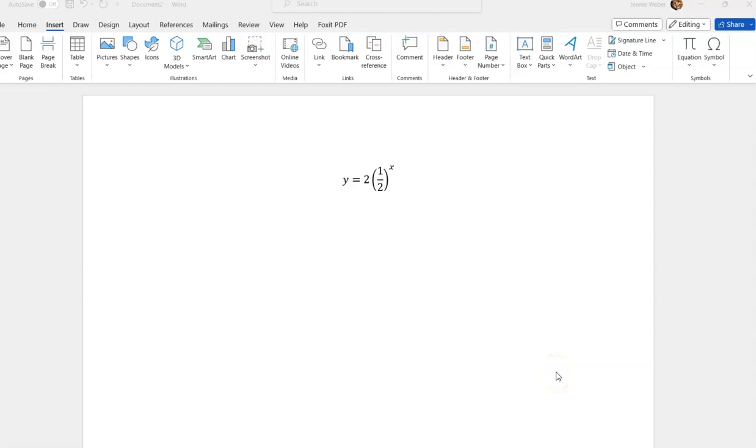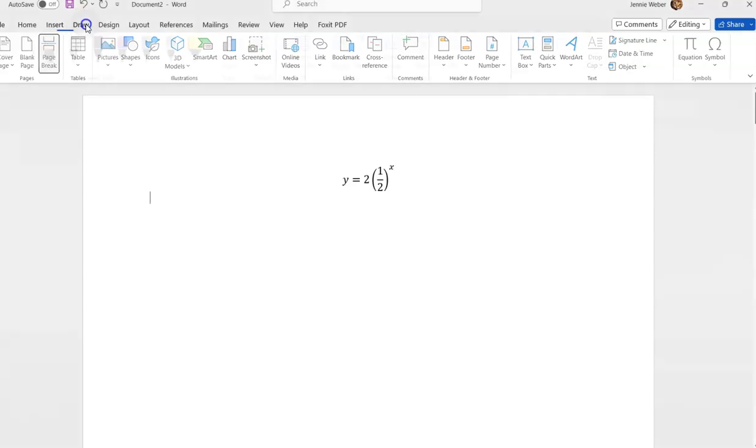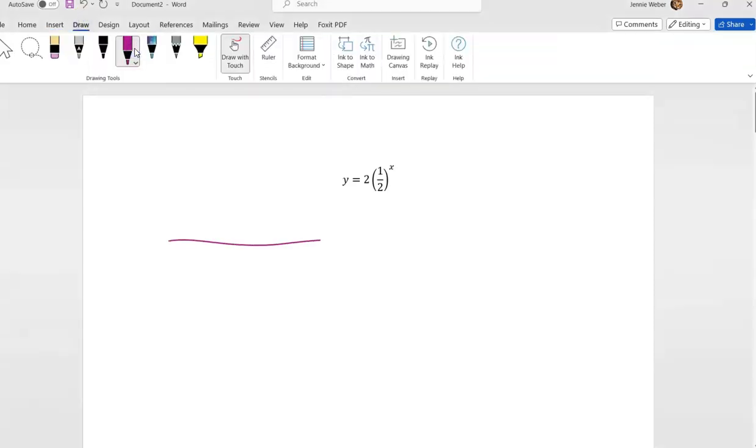Okay, we want to graph this exponential function and we're going to graph it just like we've graphed everything else. We're going to make an xy chart. Now here's the thing: as we make this xy chart, just like before we're going to pick our values of x and we're going to see what they come up for. So I'm probably going to pick, just like I would do before, I'm going to do a negative 2, a 0 and a 2.